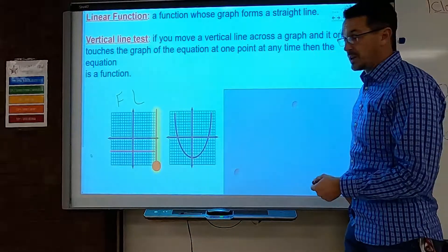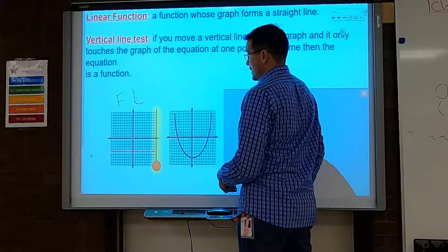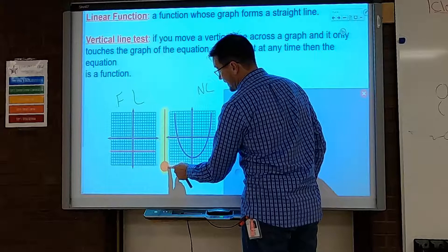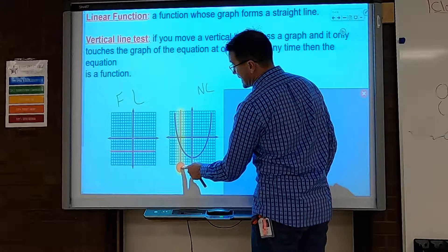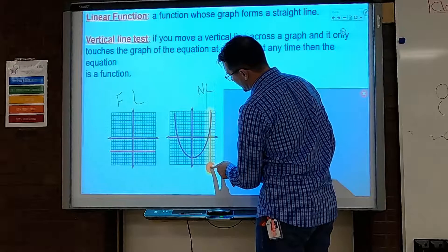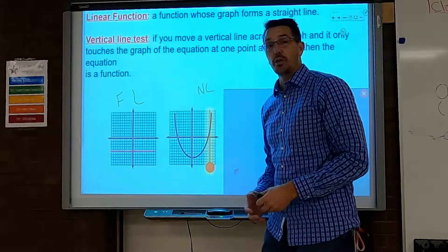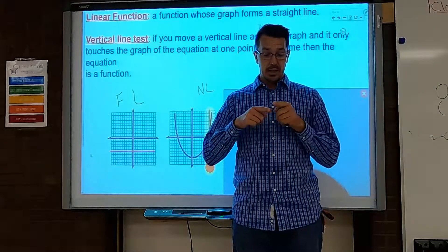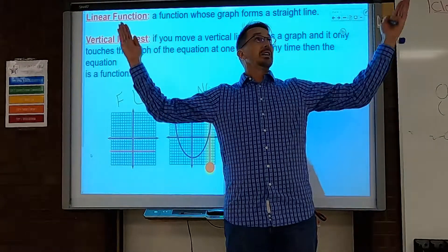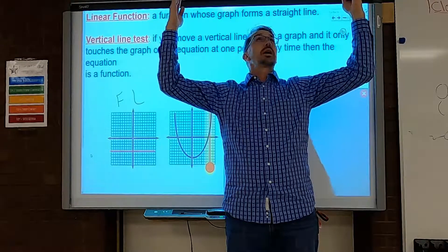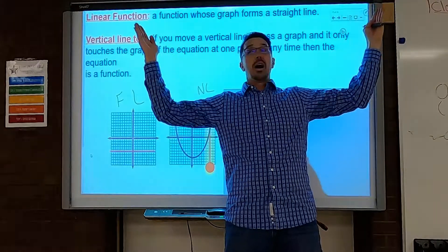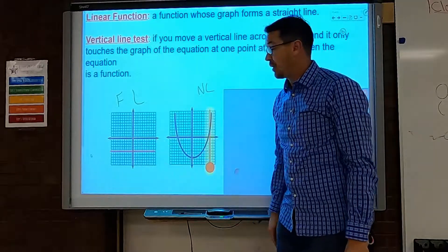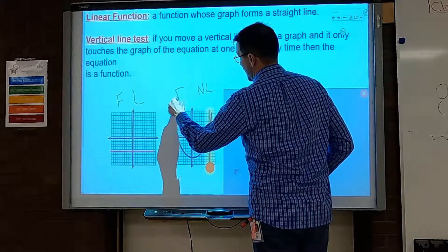That's definitely not linear — it's all loop-de-loop, like an upside-down rainbow. Does it pass the vertical line test? The answer is yes. This is actually something called a parabola, which you'll study in secondary math 2. The curve goes up and out, never repeating the same x-value, so it never repeats. This is considered to be a function.